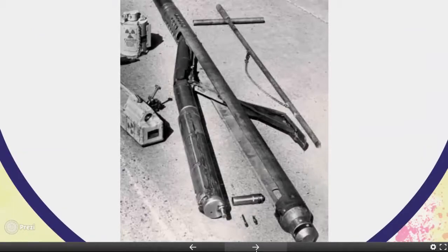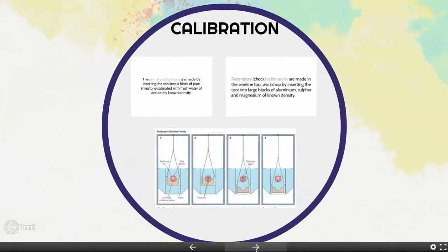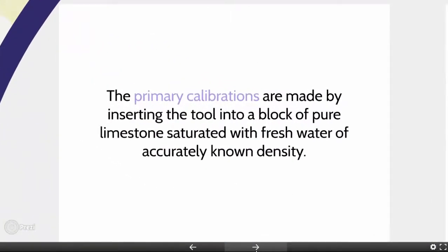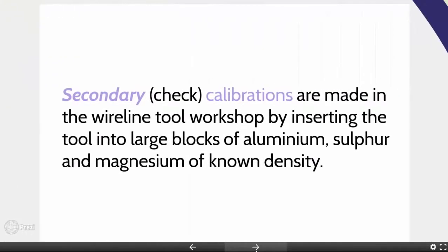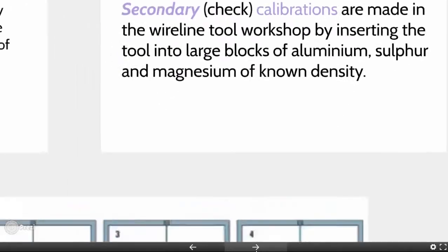An example is Schlumberger's FDC. However, hydrogen is anomalous and perturbs the direct relationship, so formation density tools are calibrated. Primary calibrations are made by inserting the tool into a block of pure limestone saturated with fresh water of known density. Secondary or check calibrations are made in the wireline tool workshop by inserting the tool into large blocks of aluminium, sulfur, and magnesium of known density.